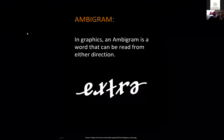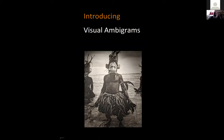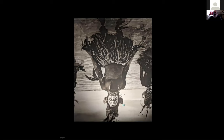An ambigram is a word that can be read in either direction — a graphic representation. Here you have the word 'ambigram' that can be read both ways, going left or right. Visually it turns out we have designs that are ambigraphic. Here we have a Malagan mask from the Malagan ceremony, and if you turn it upside down we see a representation of an ancestral skull.